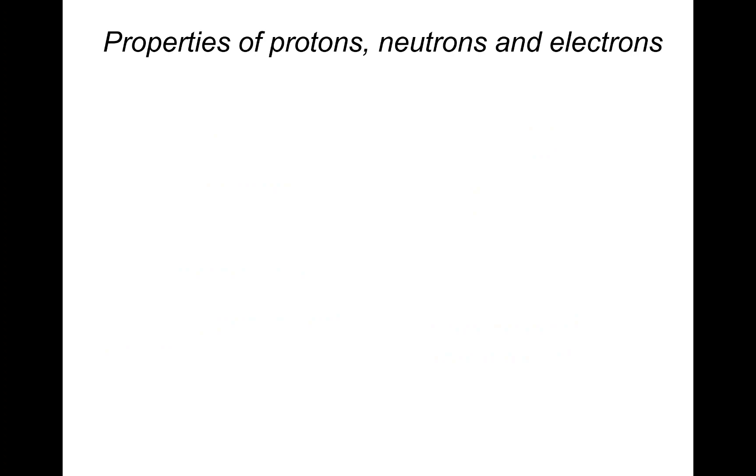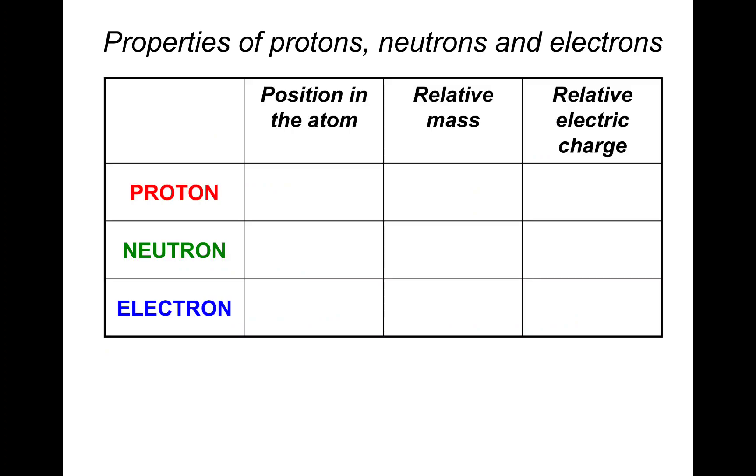What about properties of protons, neutrons, and electrons? Proton position in the atom: protons in the nucleus, that's in the center. Relative mass, so we call the proton one. It's not its actual mass. Its actual mass is one times 10 to the power of minus 27 kilograms, but you don't need to know this for GCSE.